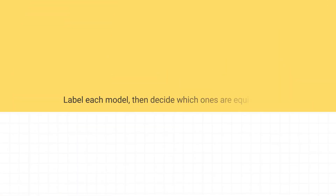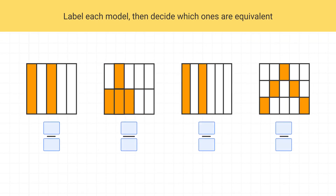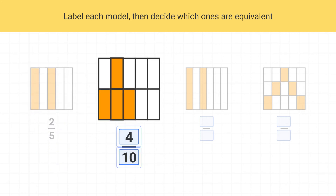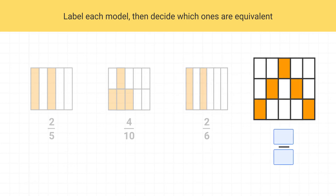Let's label each model and identify which ones are equivalent. Go ahead and label all of the fractions on your own. This first model is two-fifths. This model is four-tenths. This model is two-sixths. And finally, this model is five-fifteenths.